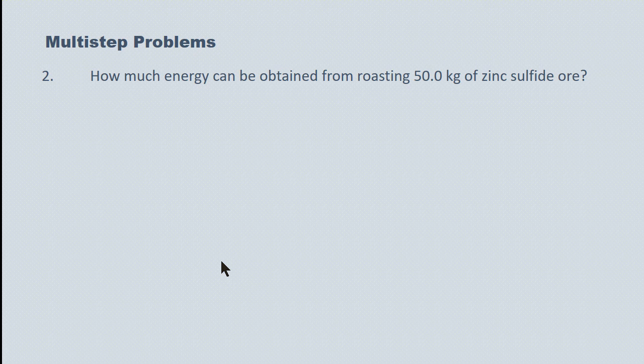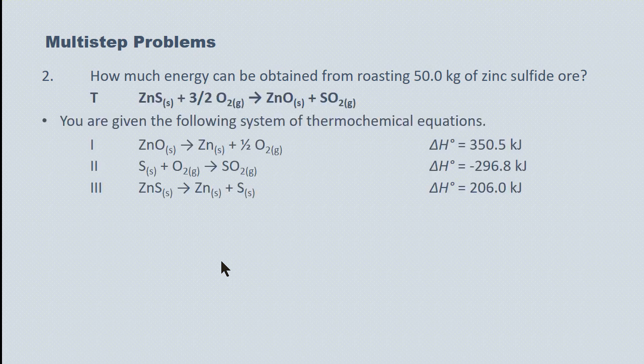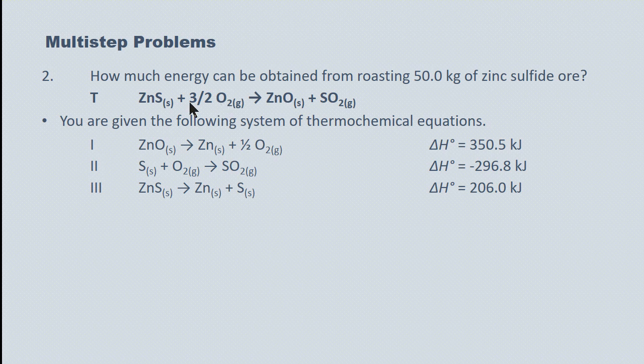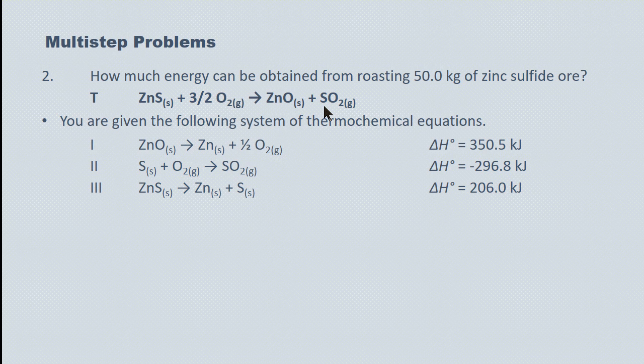Here's another example. It's a roasting process. We're roasting 50.0 kilograms of zinc sulfide ore. And so here's our target equation. You'll see that the target equation is the roasting process. And to solve for its enthalpy, in the last question we were given the enthalpy for the partial decomposition. To solve the enthalpy here though, we have to employ Hess's law. And they give us a system of equations.